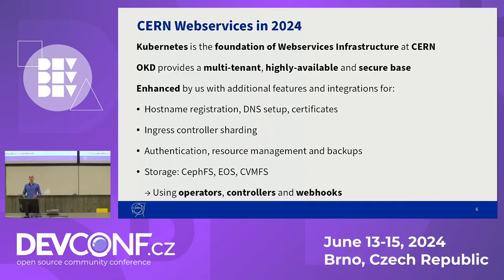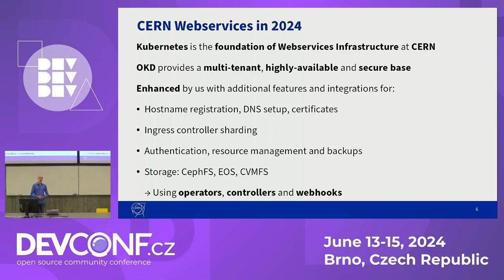Today, more than 30 years later, we still have web services and the web services infrastructure at CERN has grown to be based on Kubernetes. Specifically, we're using OKD, the open source version of OpenShift, because it provides excellent high availability, seamless in-place upgrades and excellent multi-tenancy features, so things such as namespace isolation and RBAC rules already out of the box.